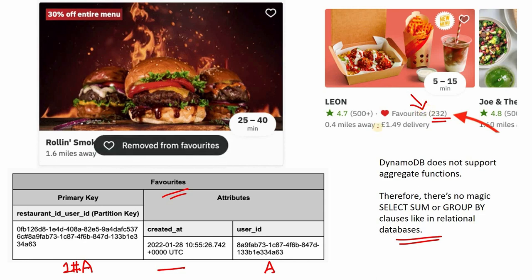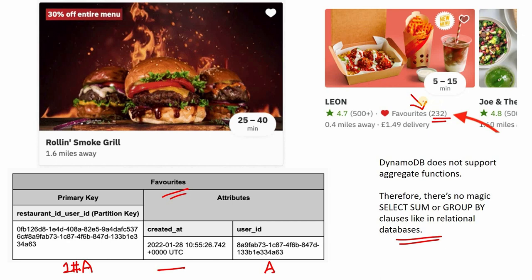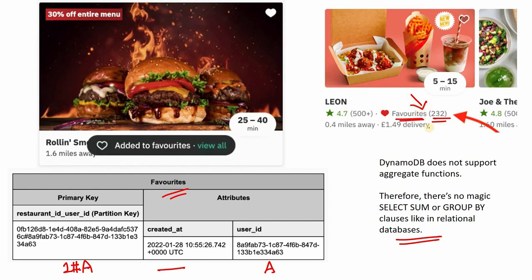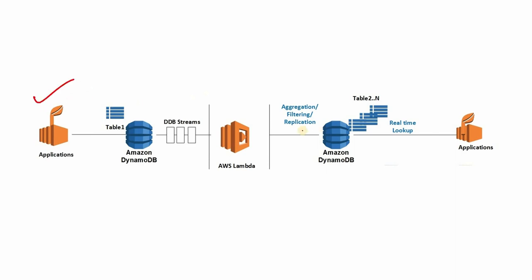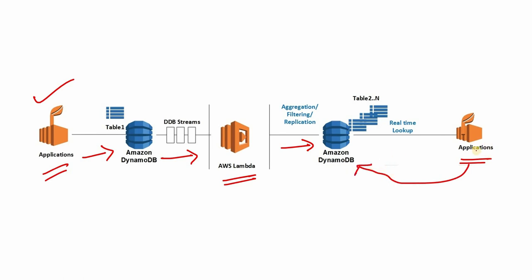Using DynamoDB Streams in an asynchronous manner, they capture that information so they can easily display the favorite count in restaurant details when a user is searching. This has a direct business impact — if a restaurant has a higher favorite count, new users will consider it a quality indicator alongside ratings. Overall, the pattern is: the main application inserts or deletes from the favorites DynamoDB table, a DynamoDB Stream triggers Lambda, Lambda aggregates into another DynamoDB table, and the application reads the aggregated result.